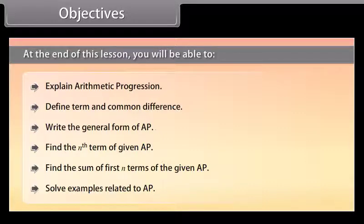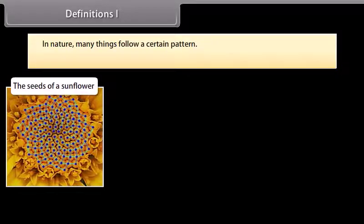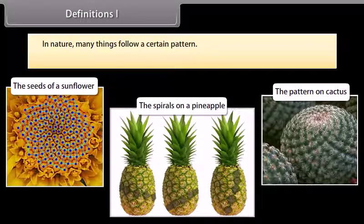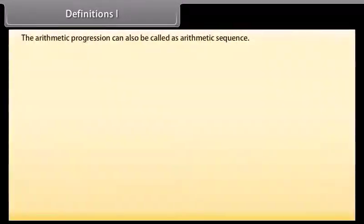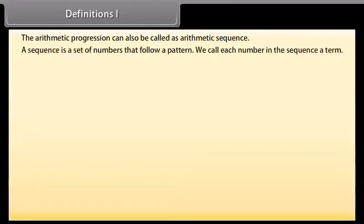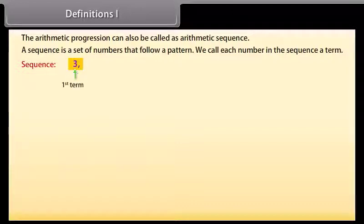In nature many things follow a certain pattern, such as the seeds of a sunflower, the spirals on a pineapple, the pattern on cactus, and so on. Arithmetic progression is a study of one of such patterns. The arithmetic progression can also be called an arithmetic sequence. A sequence is a set of numbers that follow a pattern. We call each number in the sequence a term.